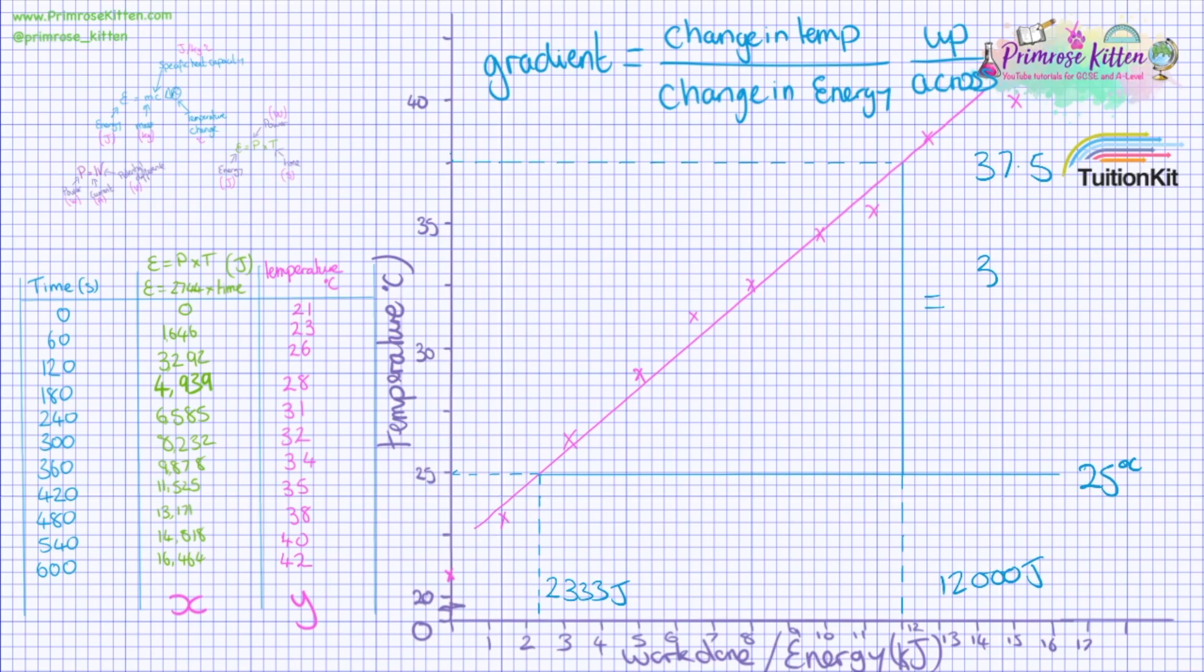And then showing all of your working. So you're showing the difference 37.5 minus 25. Clearly showing the examiner what they are looking for. Showing them that you know what you are doing.